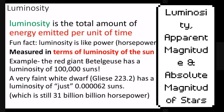So when you see an HR diagram and you see luminosity, now you know — it's just measured in how bright a star is compared to the sun. Is it 100,000 times brighter than the sun? Is it 10,000? Is it 2 times brighter? Or even a fraction?